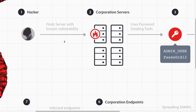First, the attacker scans multiple internet front-facing servers for a known vulnerability. Keep in mind, this is only one of many penetration vectors attackers can use. There are endless ways an attacker can find his way in, from a phishing campaign to a malicious website. The list goes on.